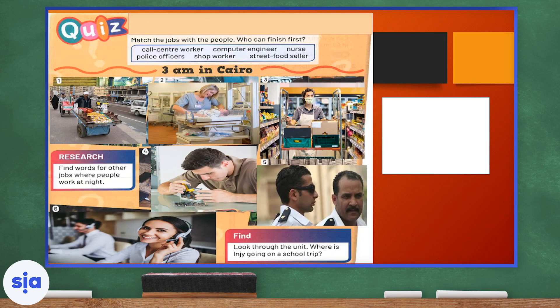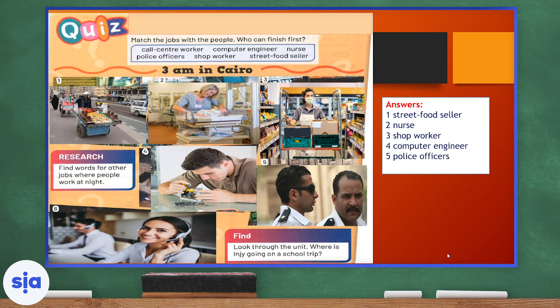Look at the pictures in the quiz and match the jobs with the people. Let's see who can finish first. 3 a.m. in Cairo. Picture number one shows a street food seller. Picture two is showing a nurse. Picture three is showing a shop worker who probably works in a supermarket. Picture four shows a computer engineer. Picture five shows police officers. They can be male or female. And picture six shows call center workers.